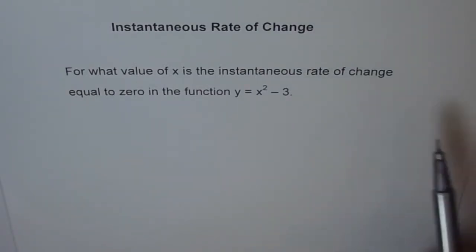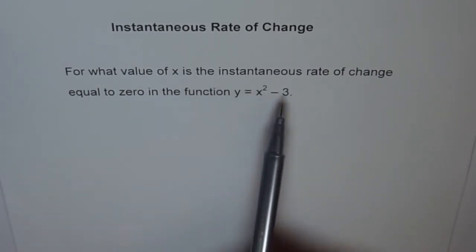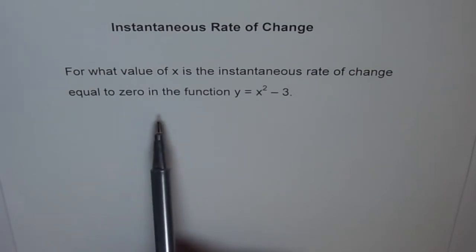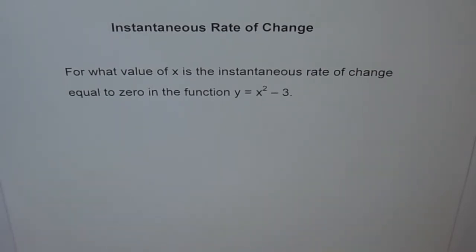This is a problem related to instantaneous rate of change. For what value of x is the instantaneous rate of change equal to 0 in the function y equals x squared minus 3?